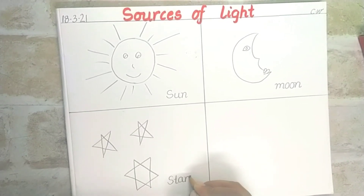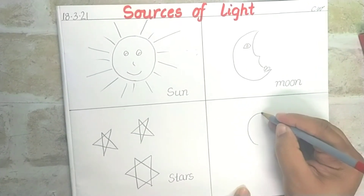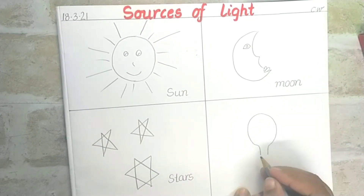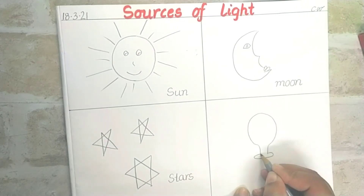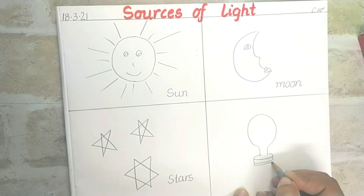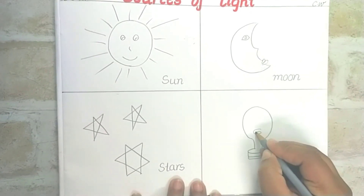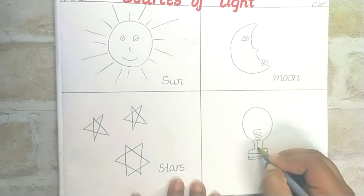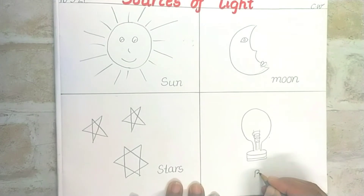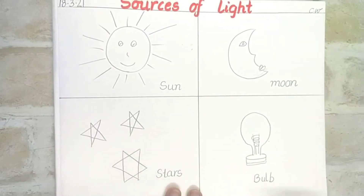Now the man-made source — the bulb. For this, draw a circle, two standing lines, one curve, and join. Then draw spirals, spirals, spirals, and two slant lines. After this, write down the name: B-U-L-B, bulb.